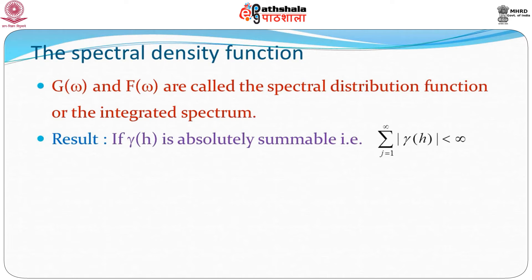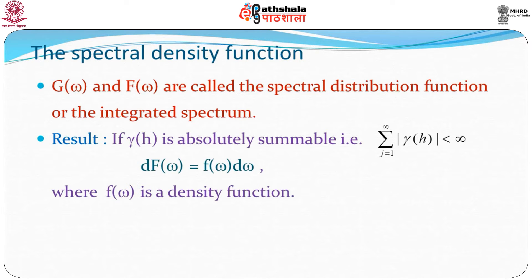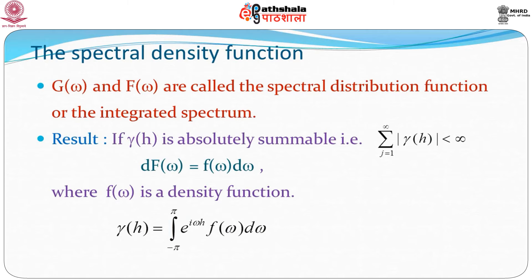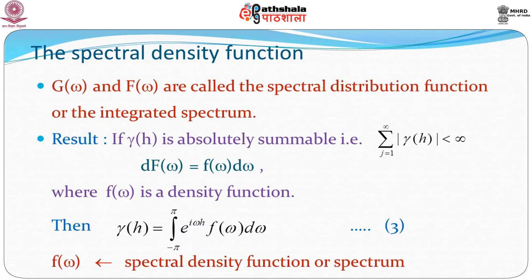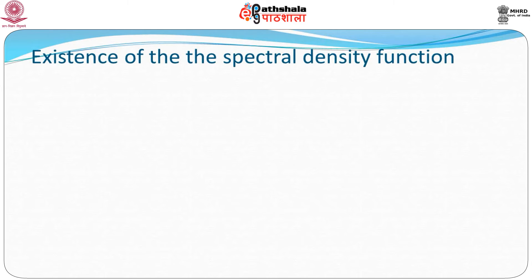Let us state a result. If γ_h is absolutely summable — meaning the summation of |γ_h| is finite, i.e., it is absolutely convergent — then dF(ω) can be written as f(ω)dω, where f(ω) is a density function. In that case γ_h can be written as the integral from −π to π of e^(iωh) f(ω) dω. This is equation 3. Instead of the distribution function, we can use the density function if we have an absolutely continuous distribution. And f(ω) as defined in equation 3 is referred to as the spectral density function or very often also called the spectrum.